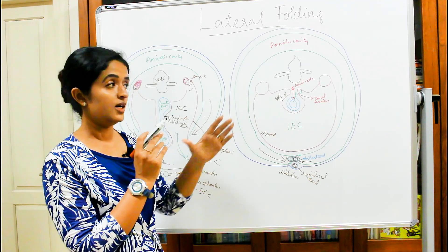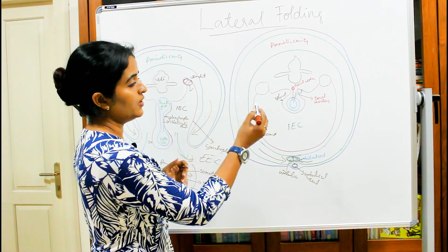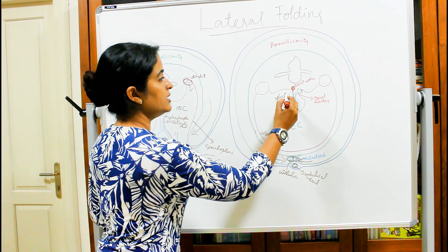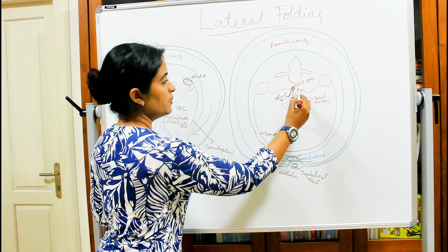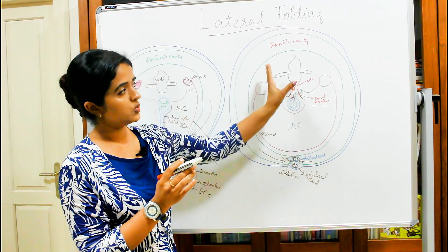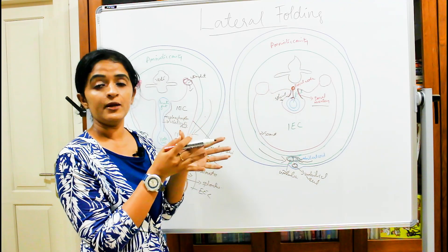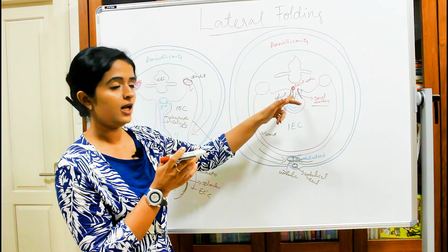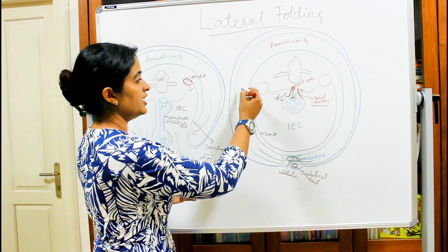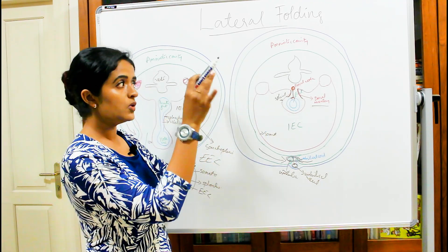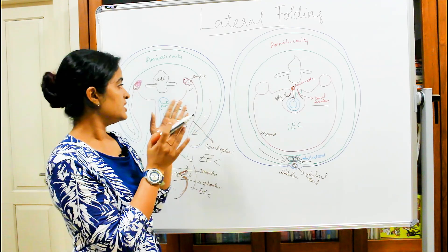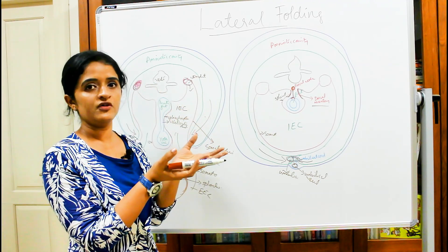We can see the dorsal aorta giving branches to the developing primitive gut. This modification of the mesoderm forms the dorsal mesentery, which suspends the primitive gut tube towards the posterior aspect. It is through this dorsal mesentery that blood vessels enter into the primitive gut tube to supply it. The amniotic cavity is now becoming bigger and bigger, covering the embryo.